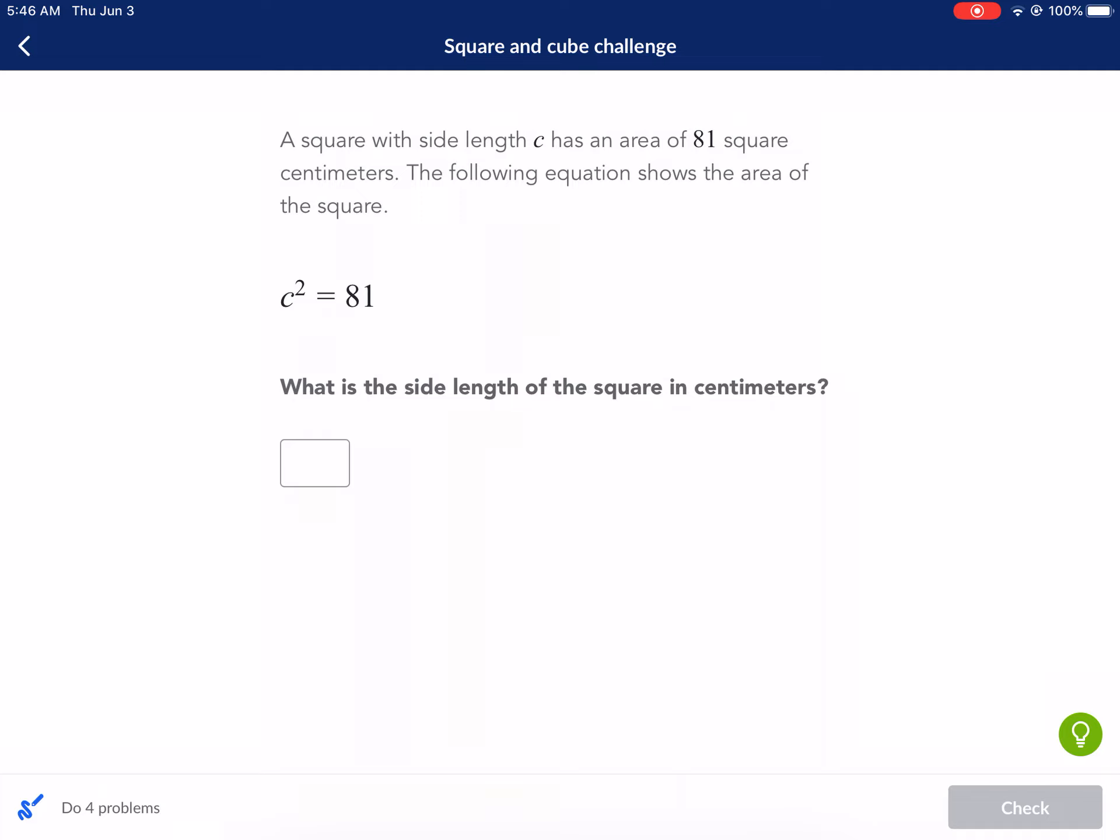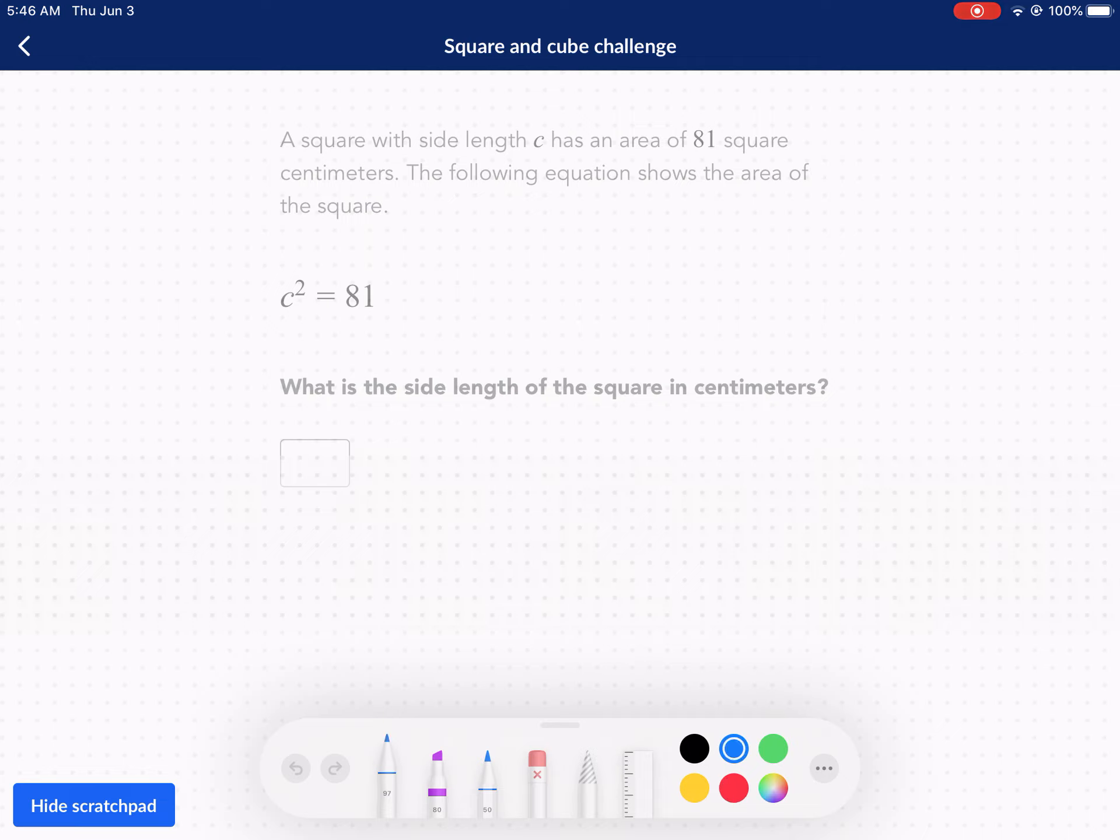A square with side length c has an area of 81 square centimeters. The following equation shows the area of the square. What is the side length of the square in centimeters? So quick drawing here. Here's our square. The area for a square is side times side, that would be the area, so that's side squared and that side is represented by c.